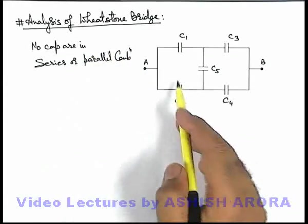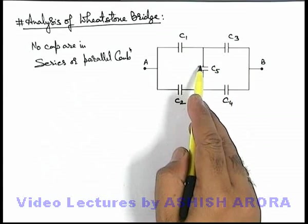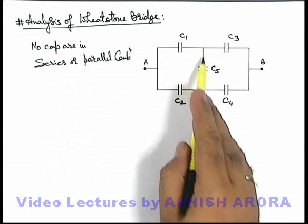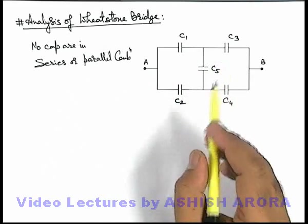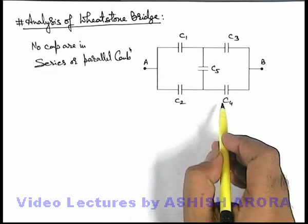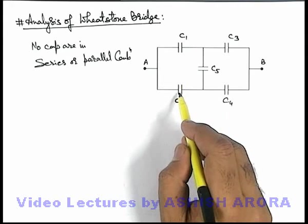Here you can see C1 and C3 would be in series if C5 were not present. If it is present and there is a branching between the two, these cannot be taken in series. Similarly C2 C4 cannot be taken in series, as well as C1 and C2 cannot be taken in parallel.